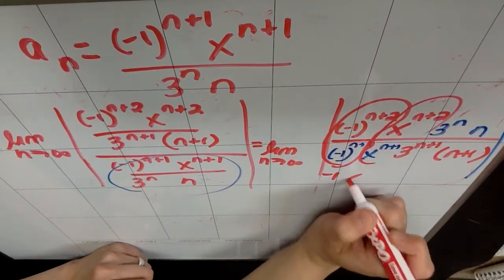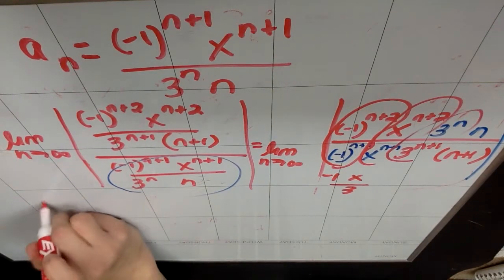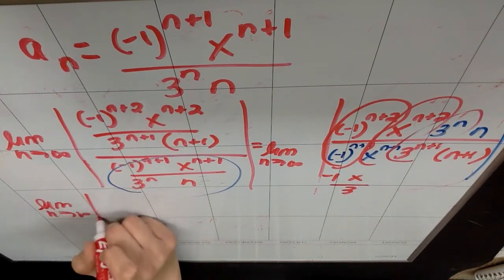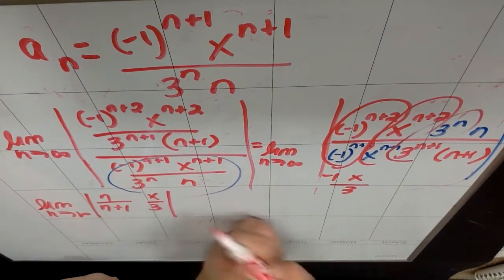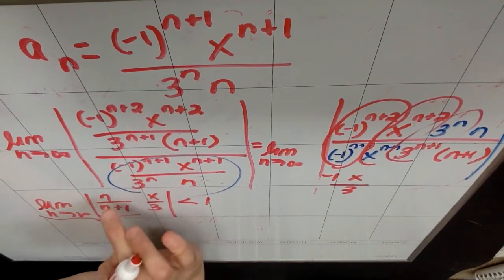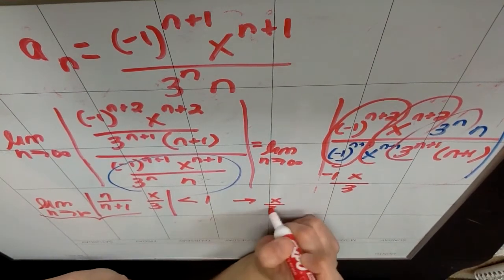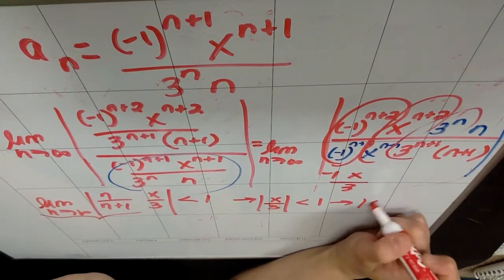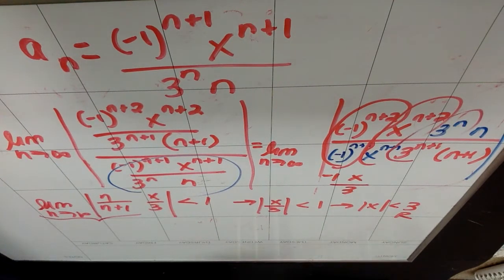So I end up getting that |x over 3| is less than one, which means the radius of convergence is three. It goes as far to the right as three and as far to the left as negative three. But I don't want the radius of convergence — I want the interval of convergence. So now I go check the endpoints.